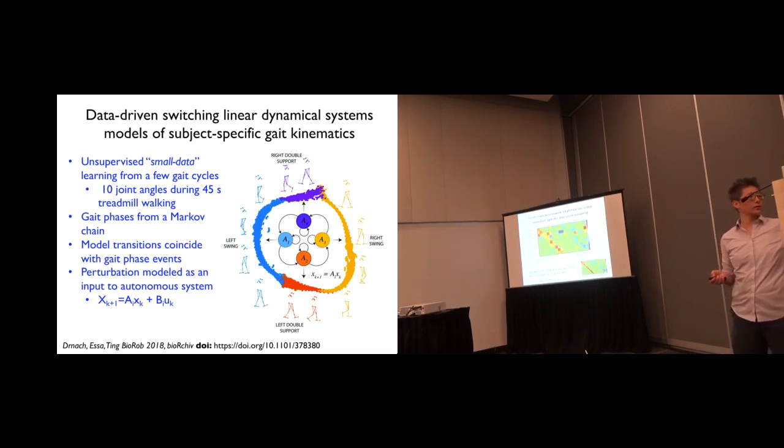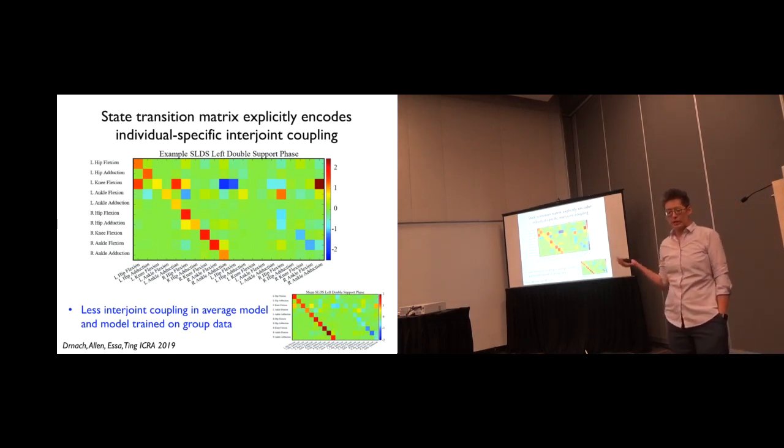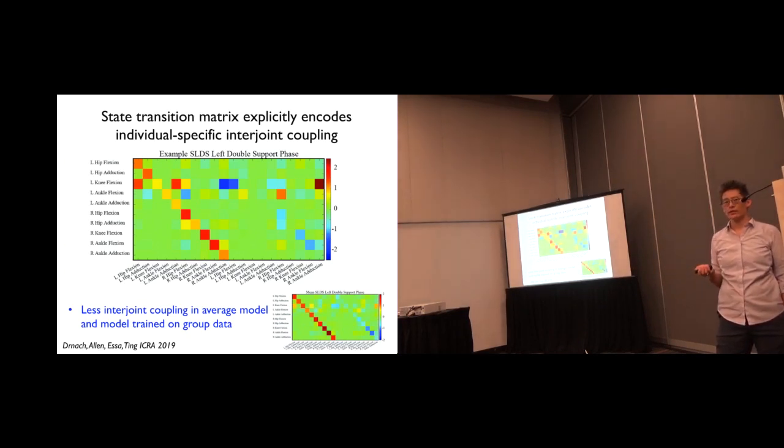Now, one of the interesting things here is that this description, a dynamic description of the gait in these different phases gives me a way to explicitly understand joint coupling. So here I have each joint angle, this would be the joint angle of the next time step, and it's a linear combination of the joint angle at the previous two time steps. So if I read this row here, it basically tells me all the dependencies of a particular joint angle on all of the other joints. So that means that the joints aren't going independently, they are actually coupled: left knee flexion depends on left hip flexion, it depends on left ankle adduction, it depends on right angle adduction.